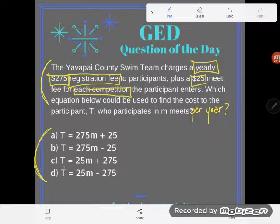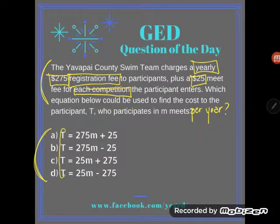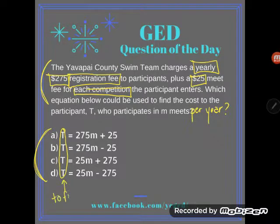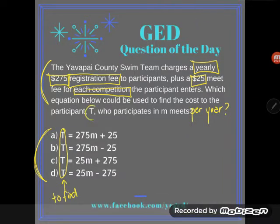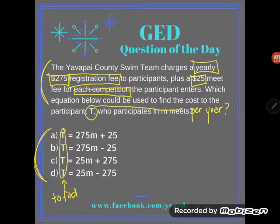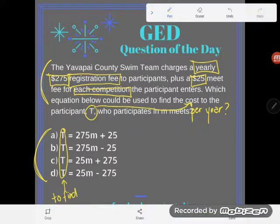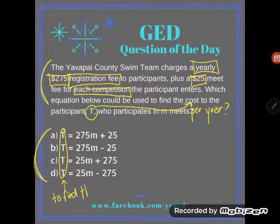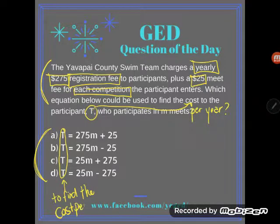They've written a bunch of equations and we can see that they all have T equals, meaning they're all saying to find the cost. What did they tell us capital T equaled? They told us capital T was the cost to the participant. So to find the cost per participant — that's what we're saying with these equations.